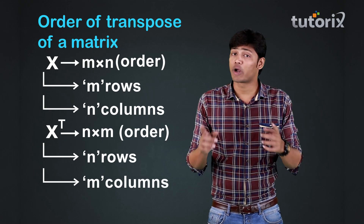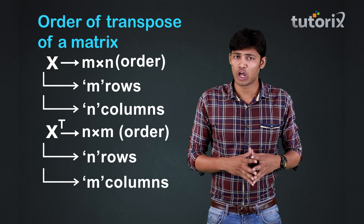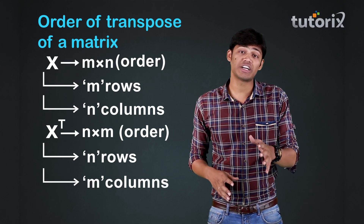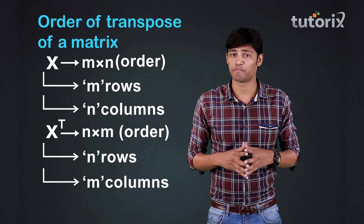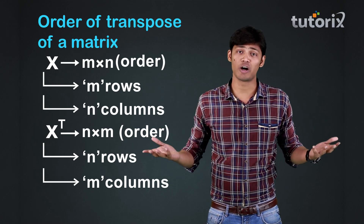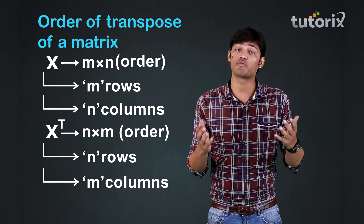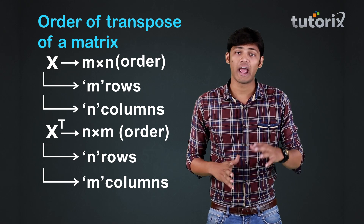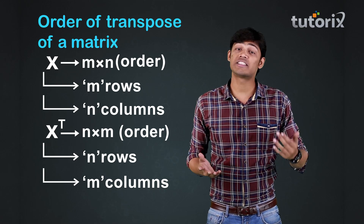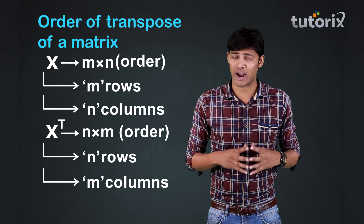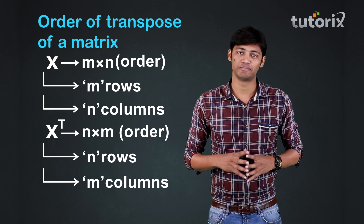Since to get the matrix X transpose we will interchange the rows and columns of the matrix X, we can conclude that if a matrix is of the order M by N then its transposed matrix will be of the order N by M.